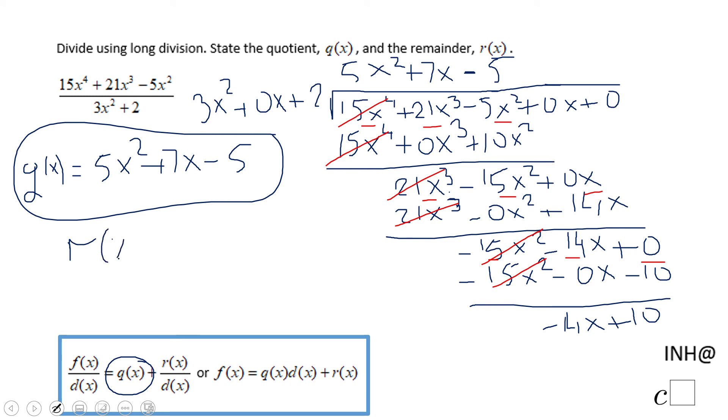R of x is the remainder, which is negative 14x plus 10.